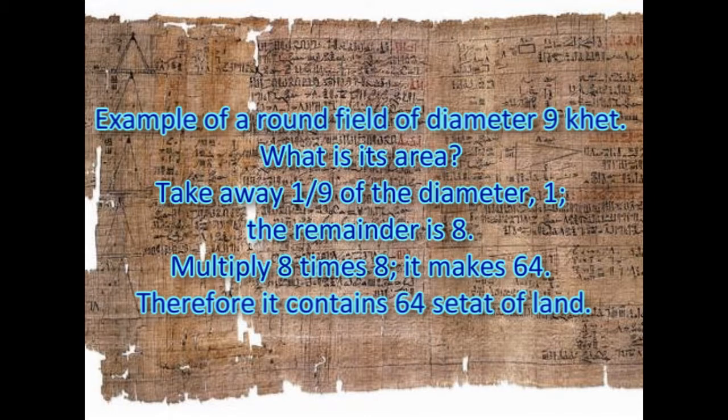And the solution they approached was: Take away 1 ninth of the diameter, which is 1. The remainder is 8. Multiply 8 times 8, and it makes 64. Therefore, it contains 64 setat of land.